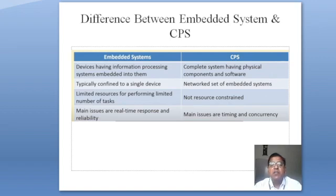The third difference: embedded systems have limited resources for performing a limited number of tasks — the number of tasks is very few. Whereas in cyber physical systems, n number of processes can be handled at a single time. The fourth difference: in embedded systems, the main issues are real-time response and reliability. Whereas in cyber physical systems, the issues are response timing and concurrency, since a lot of processes are simultaneously monitored and controlled — that concurrency is one key issue with CPS.